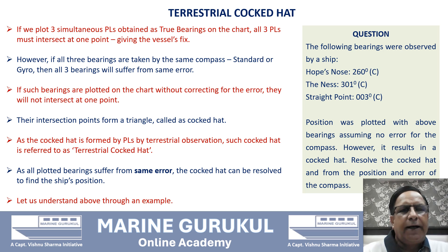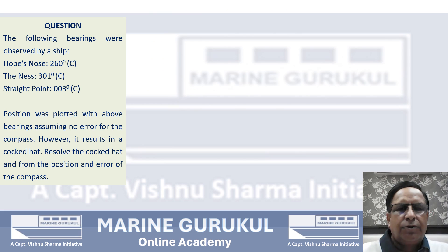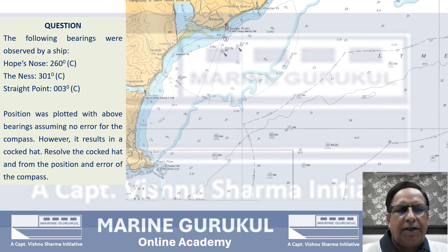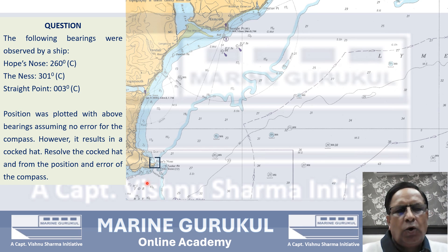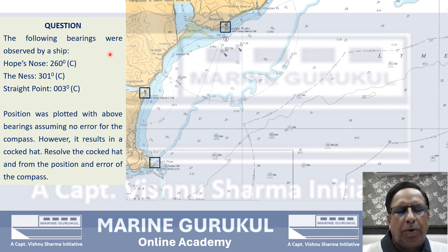From the obtained position, find the error of the compass. Here we have the chart for the area in question. We first identify the three points: Hope's Nose, The Ness, and Straight Point. The three compass bearings are now plotted on the chart.